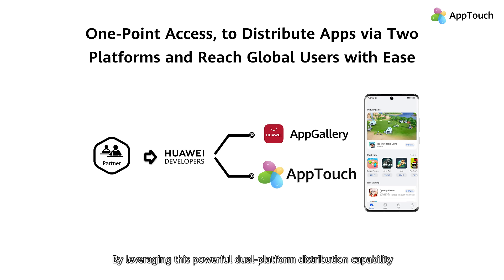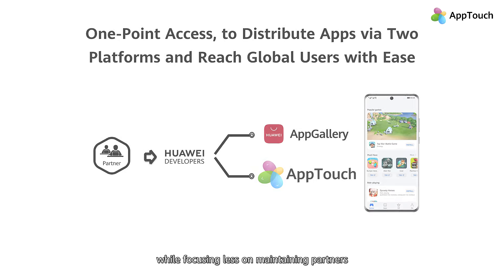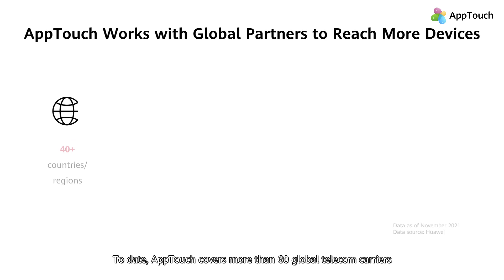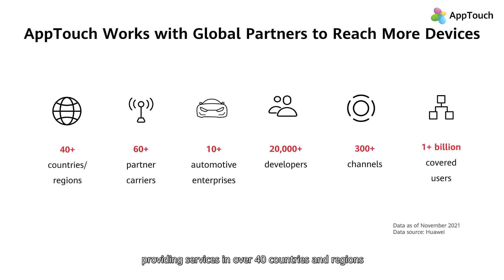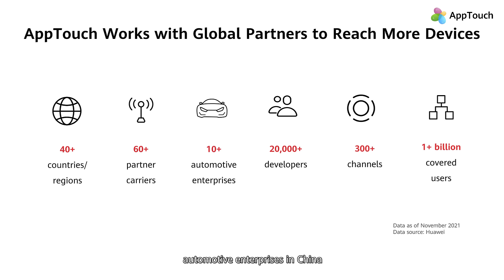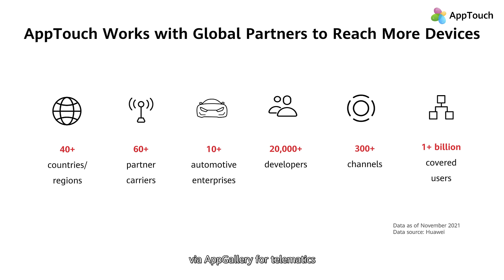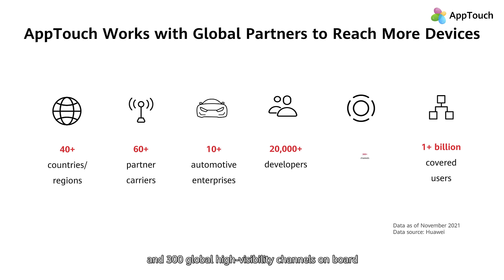By leveraging this powerful dual-platform distribution capability, you can reach more users while focusing less on maintaining partners. To date, AppTouch covers more than 60 global telecom carriers, providing services in over 40 countries and regions. In addition, AppTouch works with more than 10 top automotive enterprises in China, enabling HMS ecosystem apps to also be distributed to numerous car models via AppGallery for telematics. AppTouch already has over 20,000 developers and 300 global high visibility channels on board, reaching more than 1 billion users across the globe.